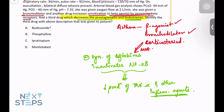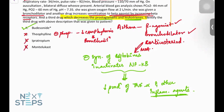The correct answer is budesonide. Theophylline is no longer used for asthma treatment; its mechanism inhibits phosphodiesterases, decreasing cAMP hydrolysis so cAMP is activated, causing bronchodilation. Ipratropium is a muscarinic antagonist. Montelukast is a leukotriene antagonist and has no action on prostaglandins, which is why it is not the right answer.